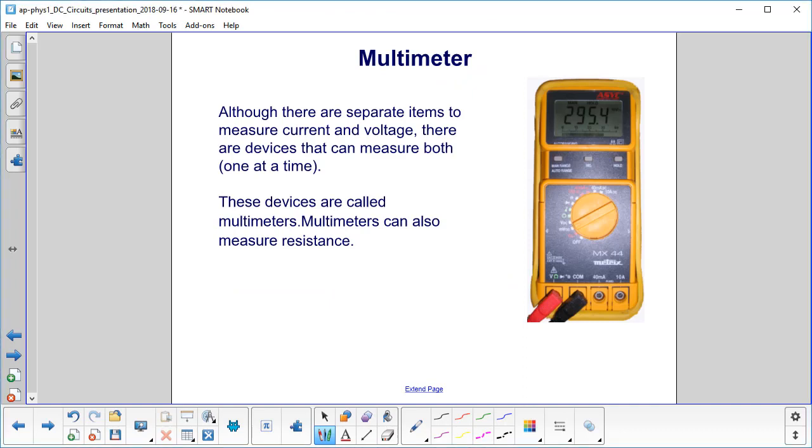There are separate items to measure both current and voltage. However, we have some that measure both, one at a time. But you can set this up to do both voltage and current. It can also measure resistance. These are called multimeters.